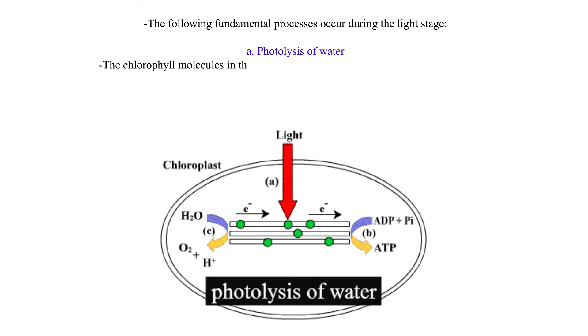The chlorophyll molecules in the grana trap light energy. This light energy is used to split water molecules into hydrogen ions and oxygen gas. This is what is known as photolysis.